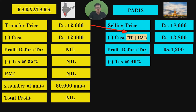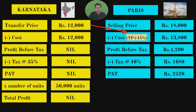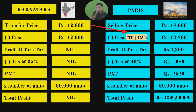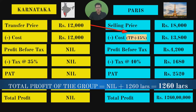Subtract tax at 40%, arriving at profit after tax per unit. Multiply by 50,000 units: total profit is ₹1,260 lakhs, i.e., ₹12.6 crores. So the first division shows profit of nil; the second division shows profit of ₹1,260 lakhs. Total profit for Quick Link as a whole = ₹0 + ₹1,260 lakhs = ₹1,260 lakhs.